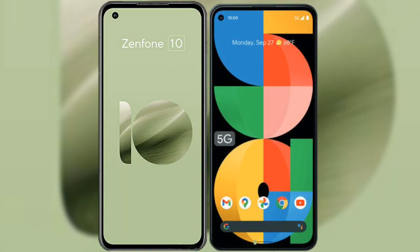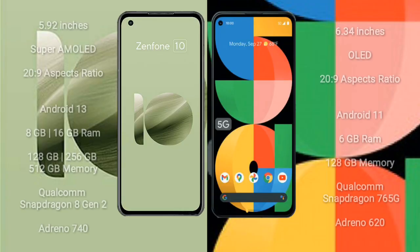I will compare the new Asus Zenfone 10 with Google Pixel 5a. Asus Zenfone 10 comes with a 5.92-inch Super AMOLED display and aspect ratio 20 to 9. Google Pixel 5a comes with a 6.34-inch OLED display and aspect ratio 20 to 9.